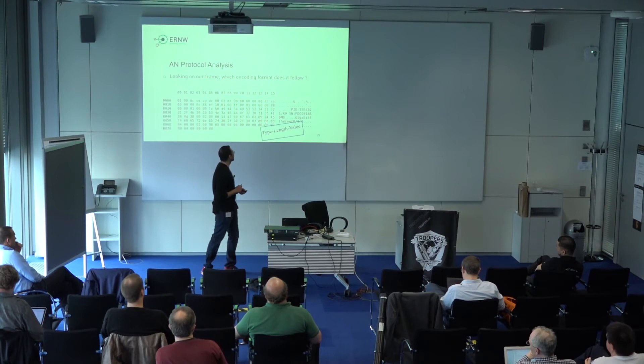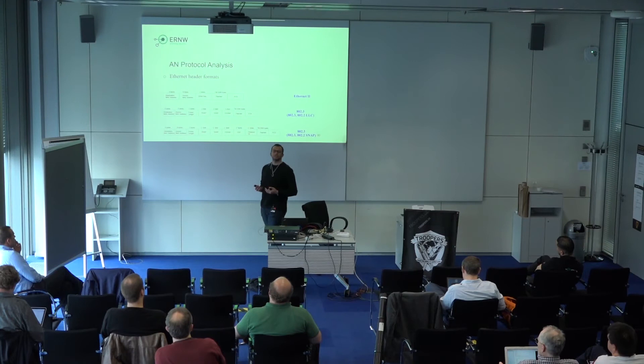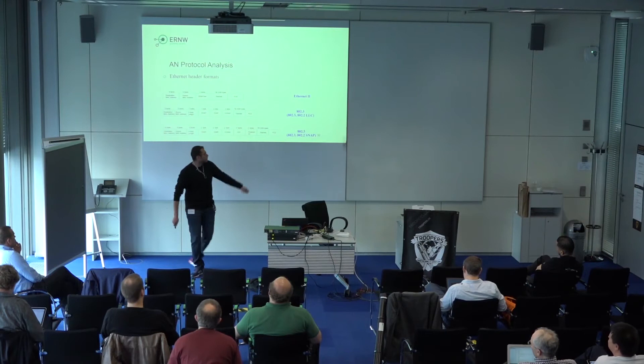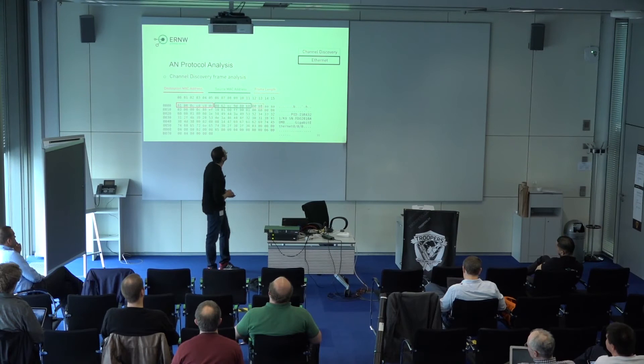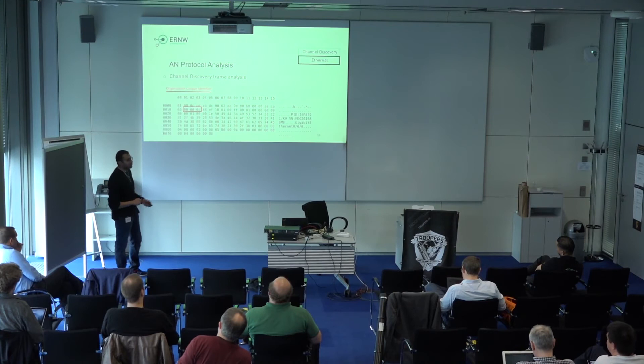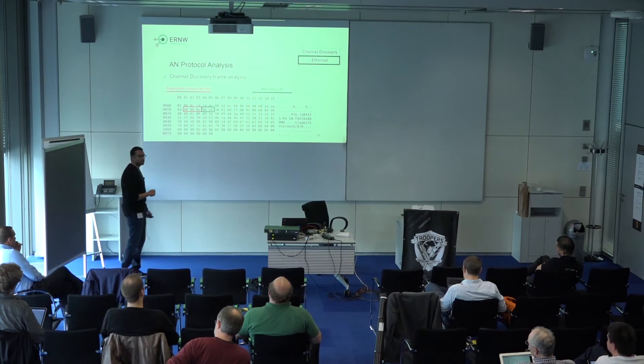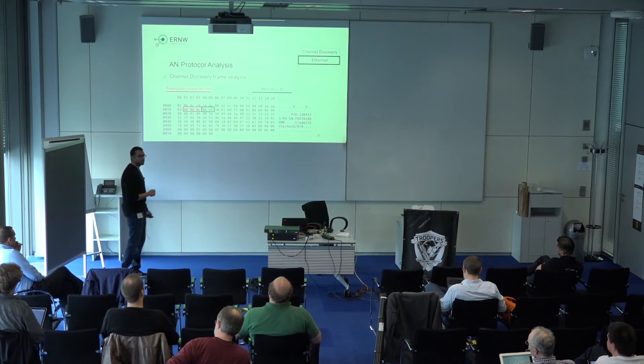How do we start analyzing? The first thing in our frame is the Ethernet frame. There are three types of Ethernet frame, and the one in our protocol is the SNAP type. So: destination MAC address, source MAC address, frame length, then the SNAP frame identifier, then the organization unique identifier — which is Cisco's — and after that, the AN protocol ID, which is what Cisco has chosen to be the protocol ID for the Autonomic Network. Starting from this point, we get the channel discovery information.